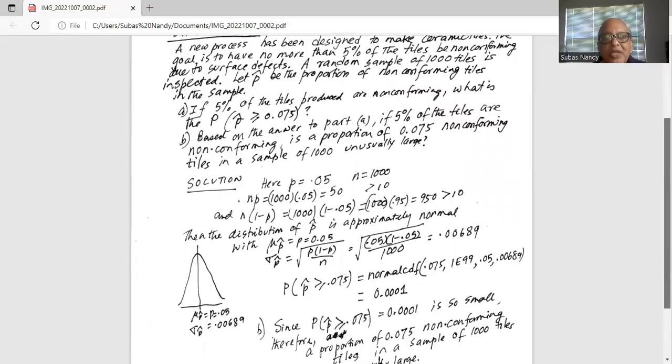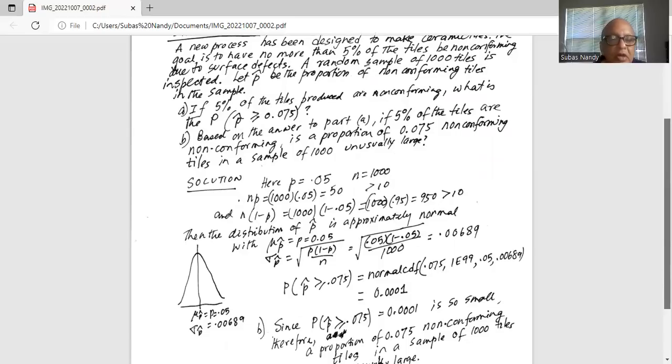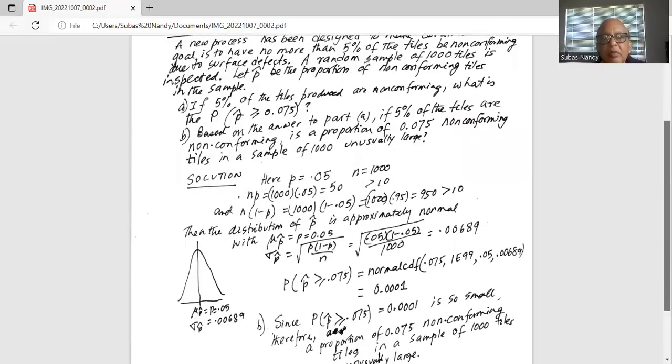So what is the probability of p hat greater than 0.075? Remember our μ p hat equals 0.05 and σ p hat is 0.00689. We will press second button and then vars and select number two, which is normal cdf. Our lower boundary is 0.075. Upper boundary is a very large number, 1 E 99, which means 10 to the power of 99. Our mean is 0.05 and standard deviation is 0.00689. This probability is 0.0001.